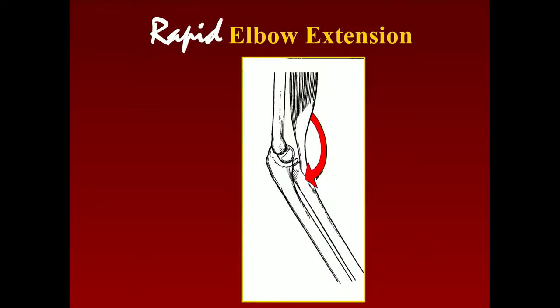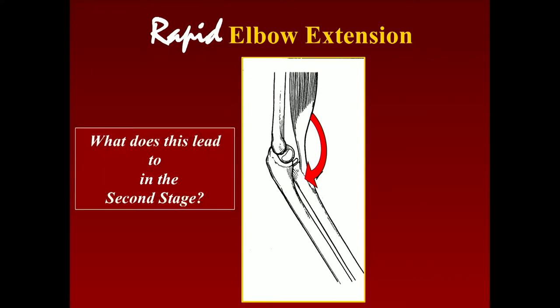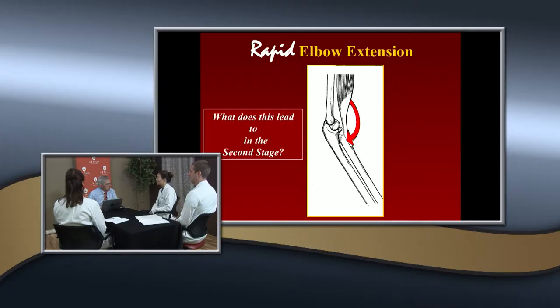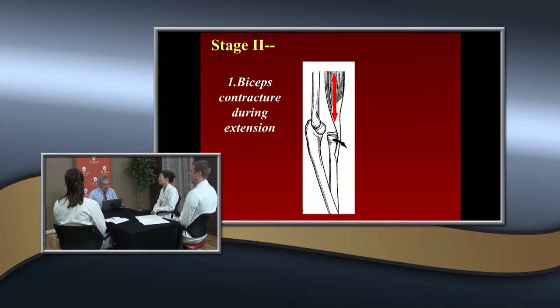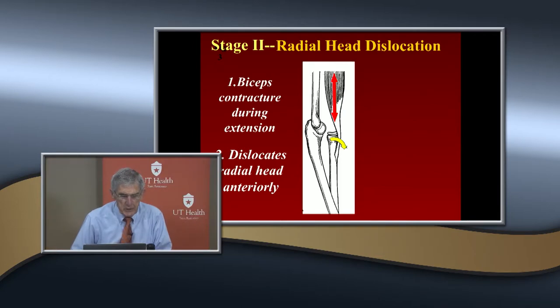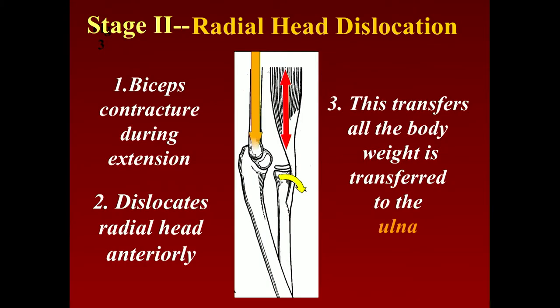Tompkins proposed this occurred in three stages. In the first stage, you get rapid extension of the elbow. That leads to the second stage — the radial head is dislocated. The weight-bearing bone is the ulna, so now the head dislocates laterally and anteriorly, putting all the body weight on the ulna. The ulna is not a very strong bone for weight-bearing — we don't walk on our upper extremities, and so it really doesn't tolerate that very well.